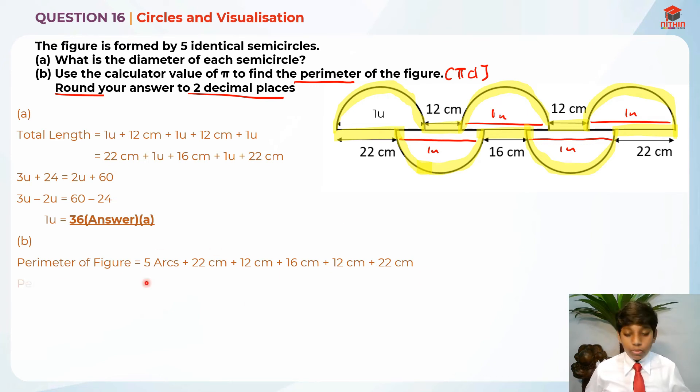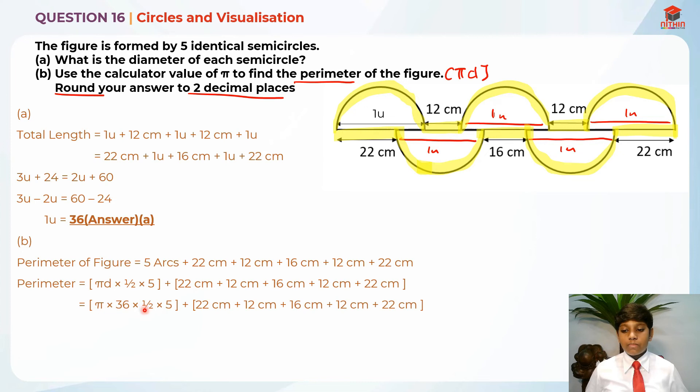The perimeter equals pi times D times half times 5, because to find the arc of a semicircle, since it's half of a circle, we need to times half. We times 5 because there are 5 arcs. Then we add up all the straight sections. You get pi times 36 times half times 5, plus all of these added together.